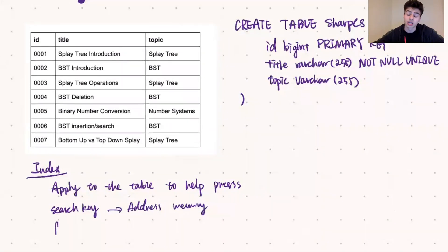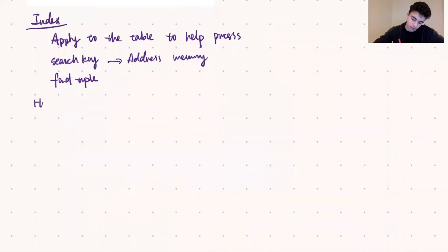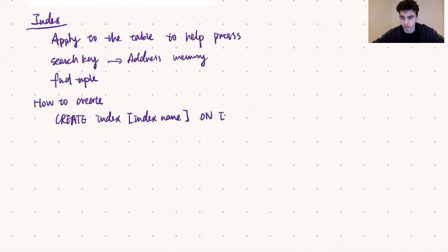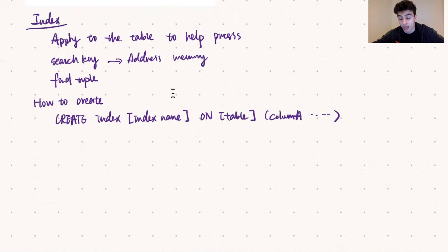Now that we know what indexes are, let's look at how we create indexes using SQL. The command is pretty simple: it's just CREATE INDEX, then you give the index a name, then ON, then the table you want to create the index on, and then you have a list of columns. You need at least one column to make the index on, but you can have more. The columns you choose will dictate which kind of index you get on your table.